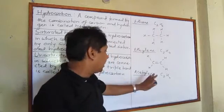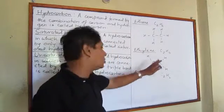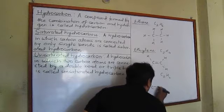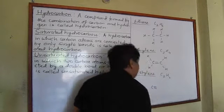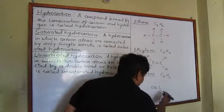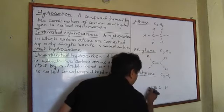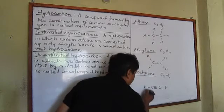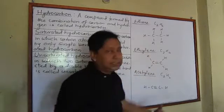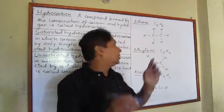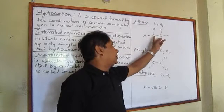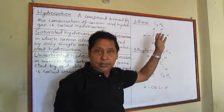In the same way, acetylene is another hydrocarbon in which there are two carbon atoms connected by means of a triple bond, and there are two hydrogen atoms connected to each of the carbon atoms. In all these compounds, two carbon atoms are connected and they are connected to hydrogen atoms.